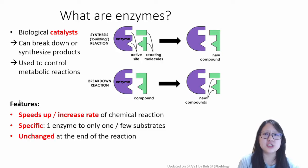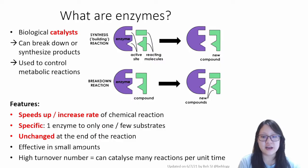It remains unchanged at the end of the reaction, meaning that only a small amount is necessary for the reaction to be sped up. Now because of its function and because it's effective in small amounts, we see the enzymes are able to have a high turnover number. It is able to produce a high turnover number because it can catalyze many reactions per unit time.